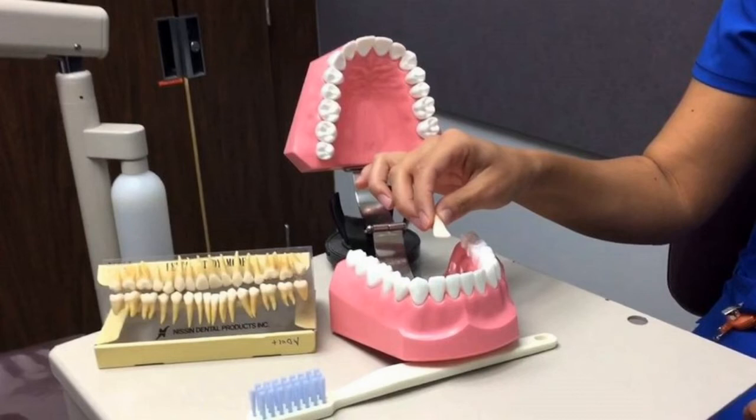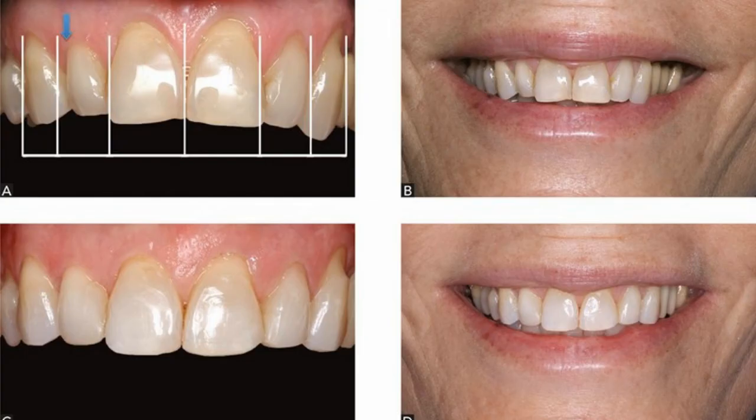Maxillary central incisors are central incisors that erupt during the age of 7 to 8. Maxillary lateral incisors are situated laterally in the upper jaw and they emerge at the age of 8 to 9.